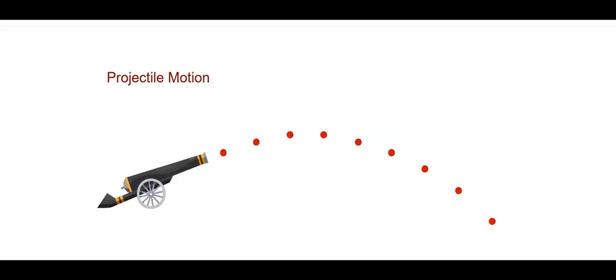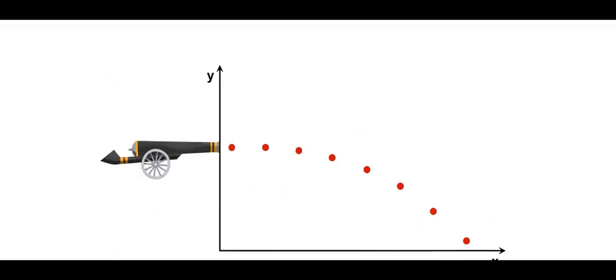...the projectile motion. So the object moves in both directions, vertical and horizontal. We can represent it in the x and y axis.